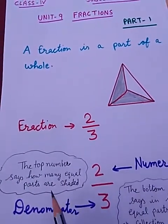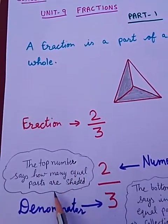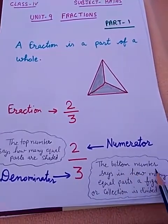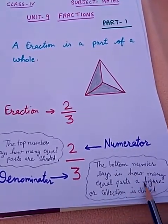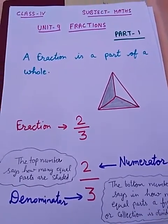Now the top number says how many equal parts are shaded, and the bottom number says in how many equal parts a figure or collection is divided.